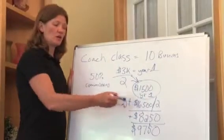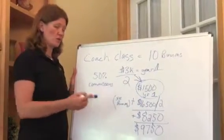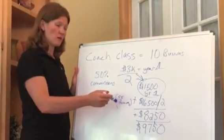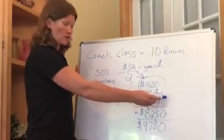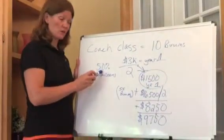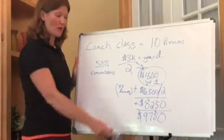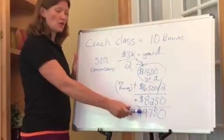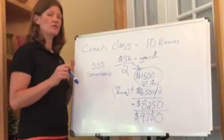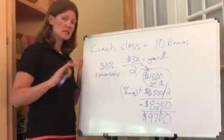Then instead of the $16,500 off of those 55 boomerangs, again, we got to take it divided by two, because you get 50% of the commissions. That equals $8,250. Add that to that, you get $9,750 for doing the same amount of work.